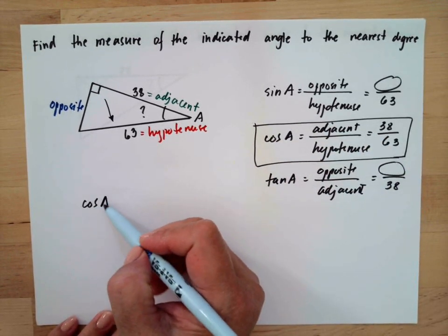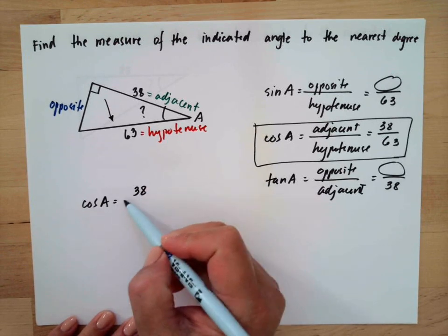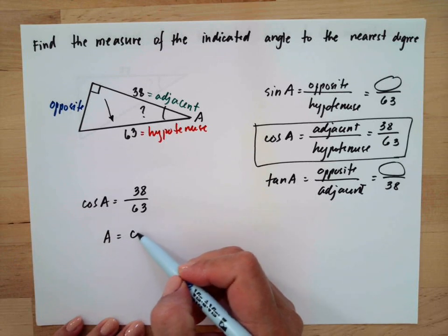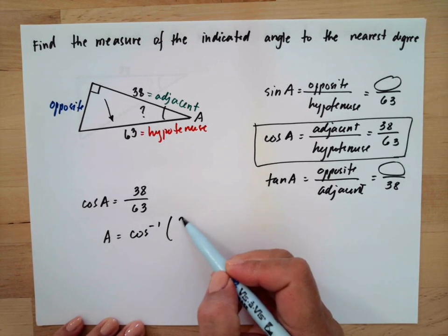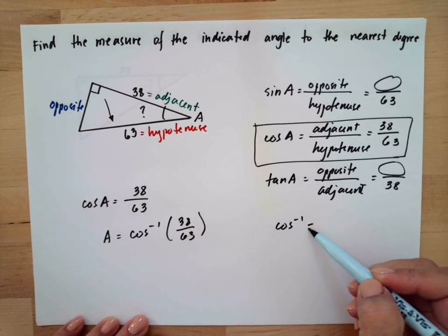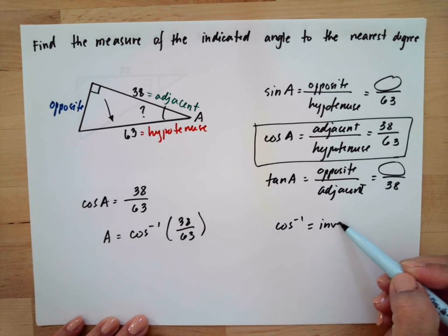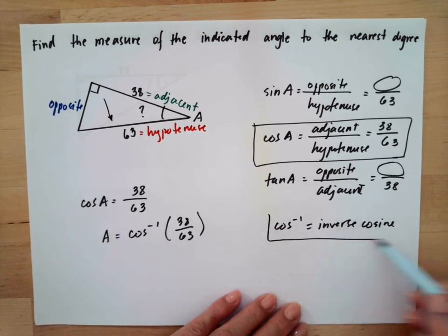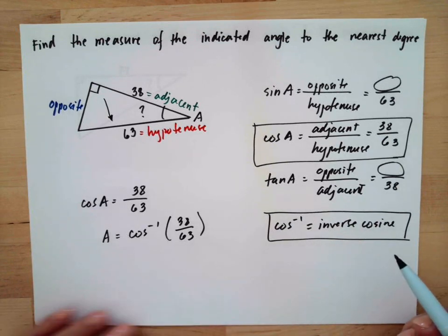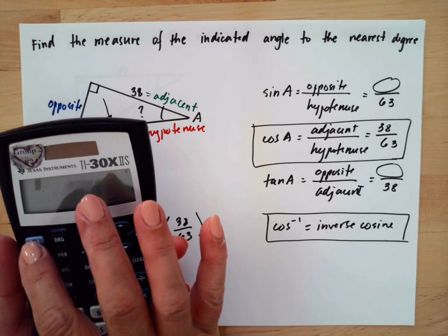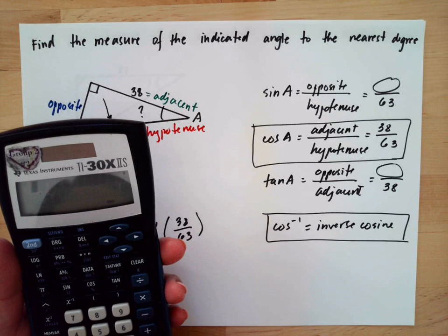Cosine A equals 38 over 63. Since we need the angle, we will do the inverse — cosine to the negative one, which is the inverse cosine. We use this to find the angle. Using the calculator, press second to activate the inverse, then cosine.